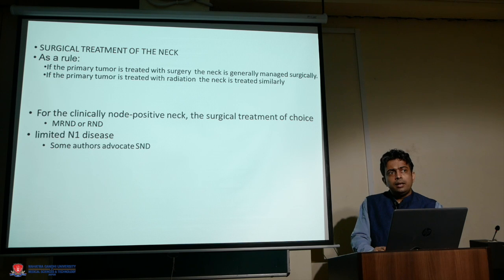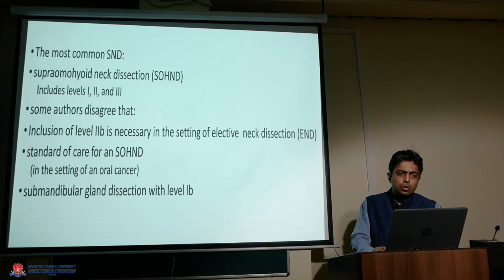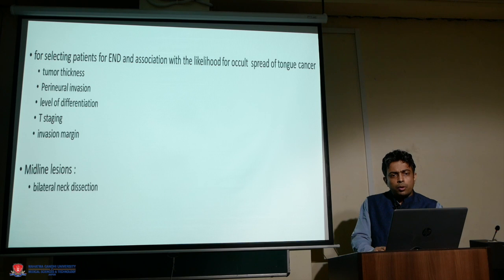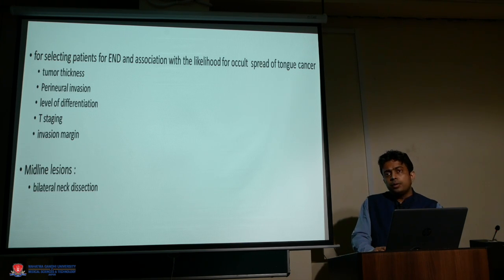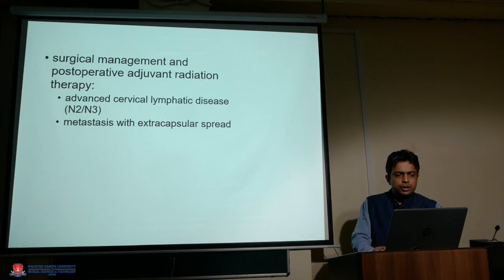For N1 disease limited to a single lymph node, selective neck dissection covering levels 1–4 is performed; level 4 is important due to skip metastasis risk. The most commonly performed procedure is a supraomohyoid neck dissection, though many authors include level 4. Risk factors for elective neck dissection and occult spread include tumor thickness, perineural invasion, level of differentiation, T staging, and margin status. Tumors crossing the midline warrant bilateral neck dissection.